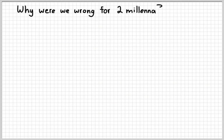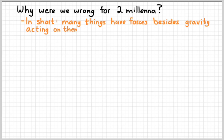So question, why were we so wrong about this free fall for almost 2,000 years? Basically, it's because things have other forces besides gravity that might be acting on them.